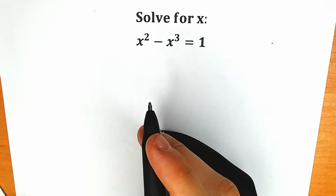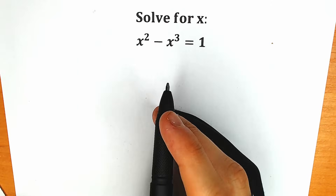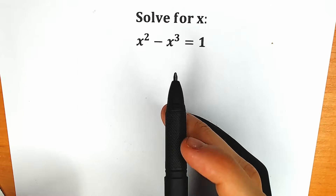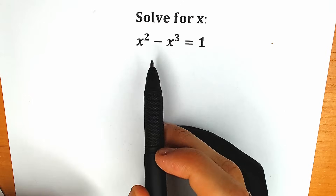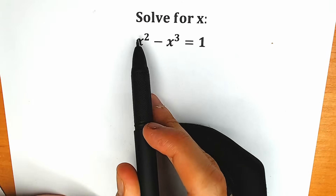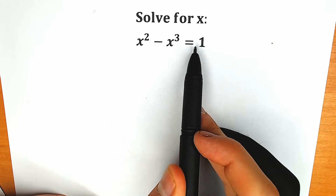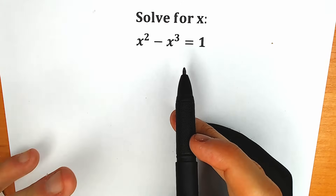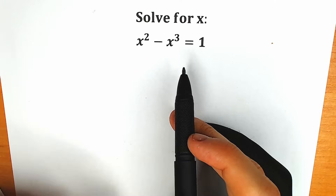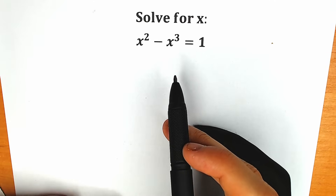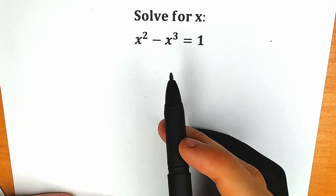Hello, everyone. Happy to see you here. Welcome back to my channel High Mathematics. Today we have a very interesting cubic equation from Andrew's examination. We have x squared minus x cubed equal to 1 and we need to find x. If you have your answer, you can also write your solution down into the comment section and in a few minutes we will check it.